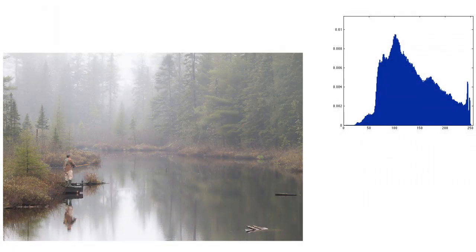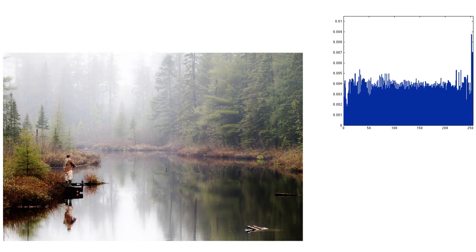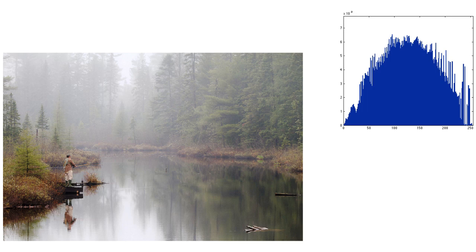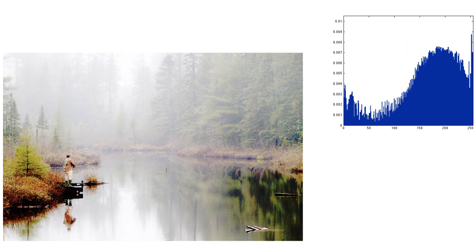Running that script, we first see the original image with its histogram. After pressing return, we see the image histogram matched to a flat histogram, then to a linear function, then the sine. Finally, matching to a cosine with a phase of pi over 2 shifts it about a quarter of the way across the intensities, and A equal to 0.9 gives quite a bit of peak to trough. I hope that helps as you develop this function and others throughout this class.